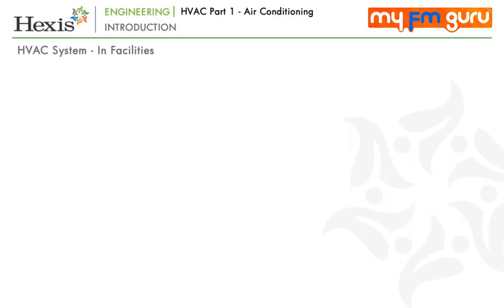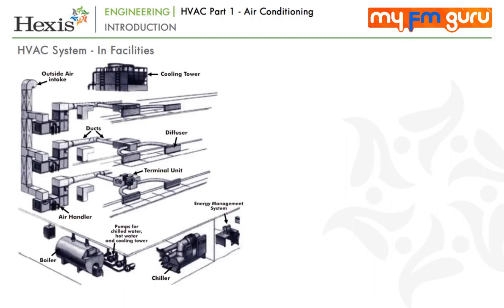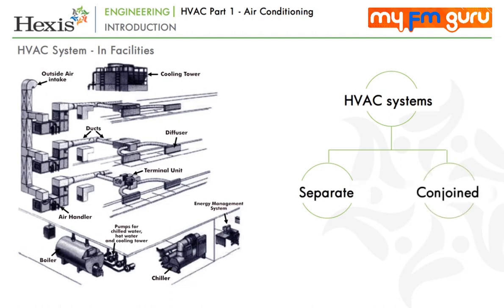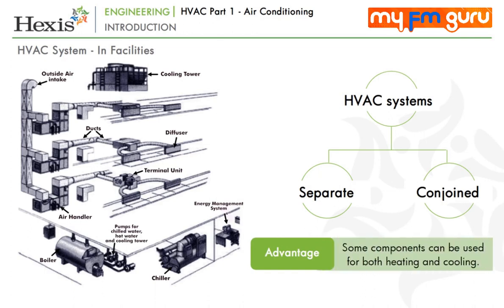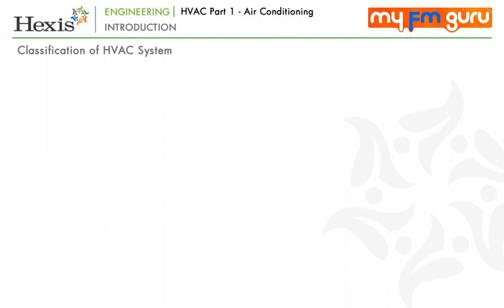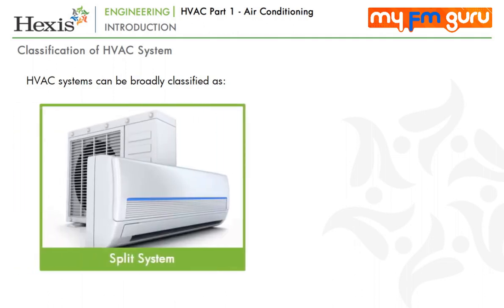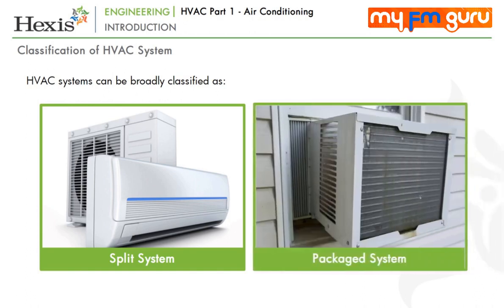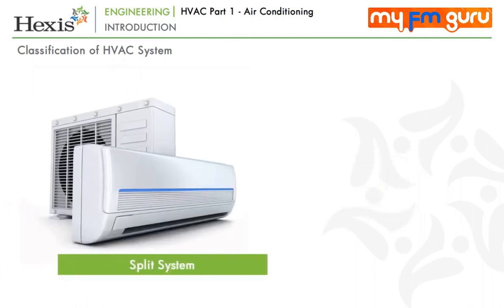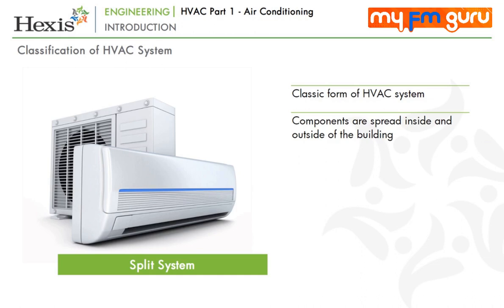HVAC systems constitute of heating, ventilation and air conditioning systems. Depending on the climatic conditions, the heating and air conditioning systems may be separate or conjoined to provide heating or cooling as required. The advantage of a combined system is that some components like ductwork or heat exchangers can be used for both heating and cooling. HVAC systems can be broadly classified into split systems — for example, split ACs where one unit is inside and one is outside — and packaged systems, for example window ACs which are a single unit.